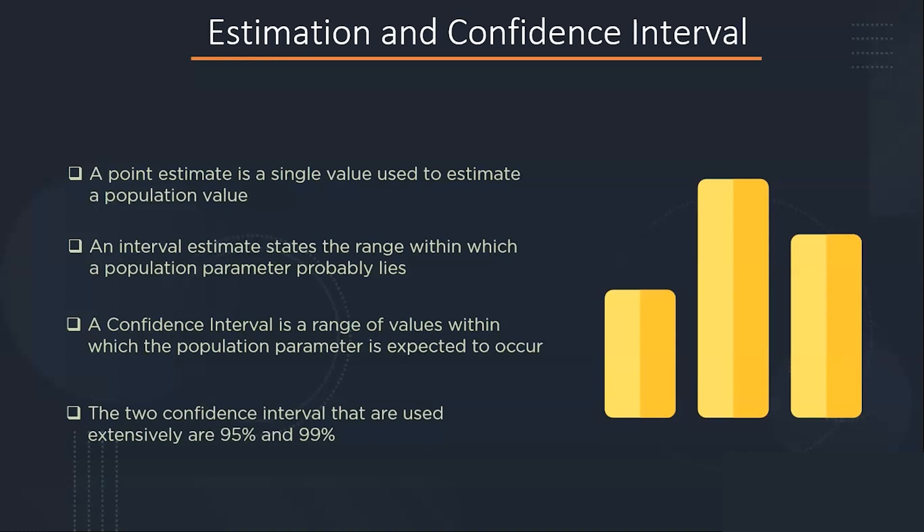A confidence interval of 95 percent means that it is 95 percent certain that our population parameter lies in between this confidence interval.